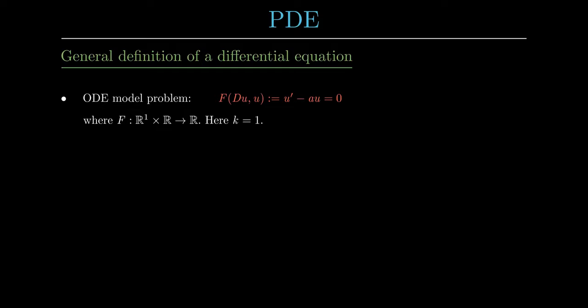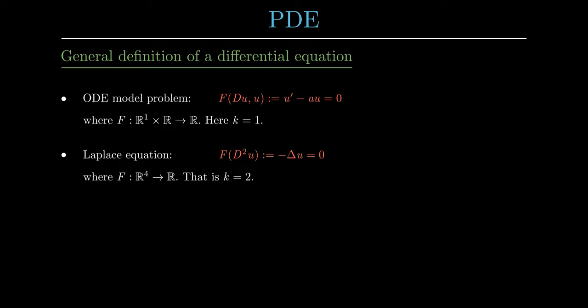Let the spatial dimension be 2. The first important PDE is the Laplace equation, with f equals minus Laplace u, where the Laplace operator is the sum of the second derivatives of u. Since we are dealing with second derivatives, the order of the differential equation k is 2.